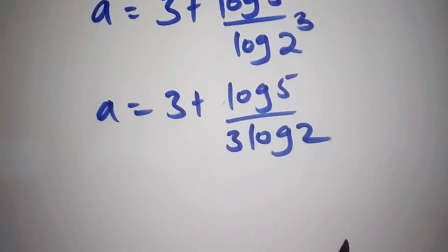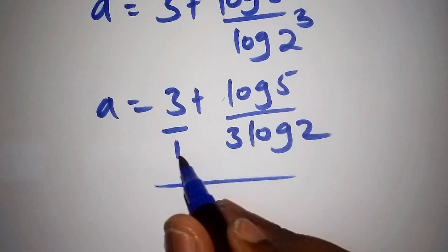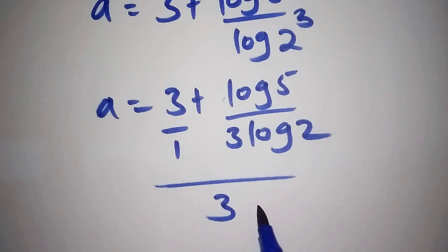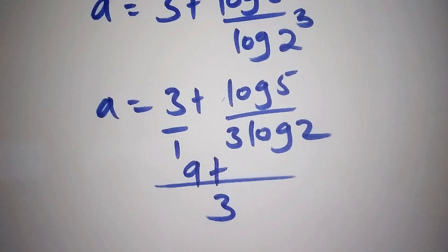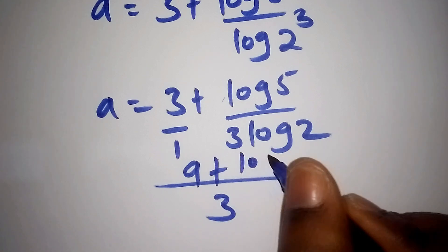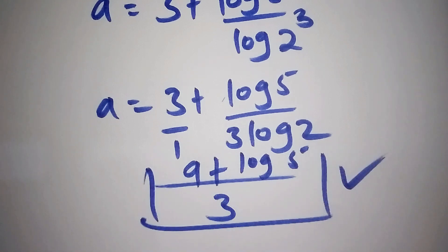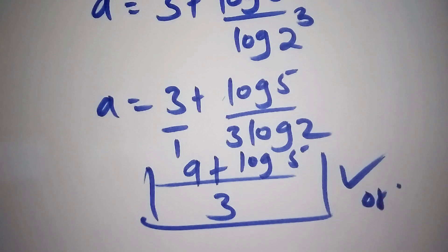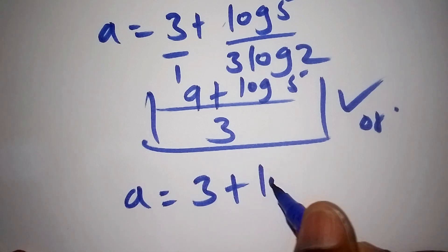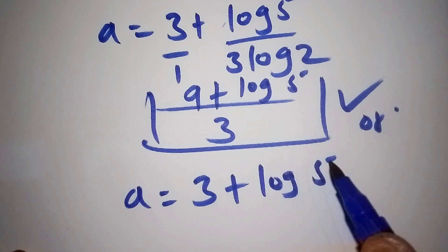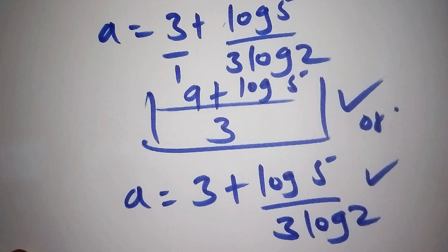When we simplify, using LCM of 1 and 3 being 3, we get 9 plus log 5, all over 3. So this qualifies as our correct answer, or we can leave it as A equals 3 plus log 5, all over 3 log 2. Either form is the correct answer.